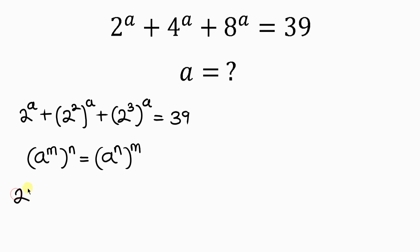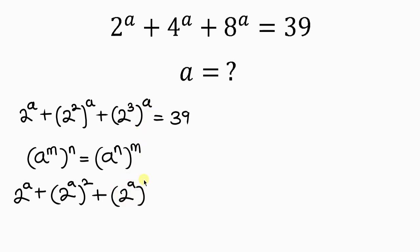So this becomes 2 to the a, plus this becomes 2 to the a raised to the 2, plus this becomes 2 to the a raised to the 3. This is equal to 39. Notice that the left-hand side is made up of a perfect cube, a perfect square, and a number. So we're going to be breaking down 39 into the sum of a perfect cube, perfect square, and a number.